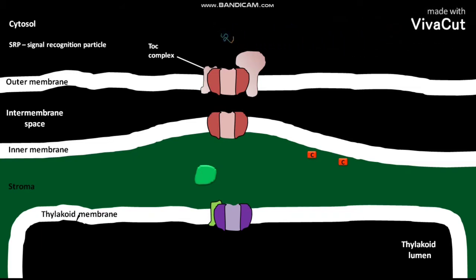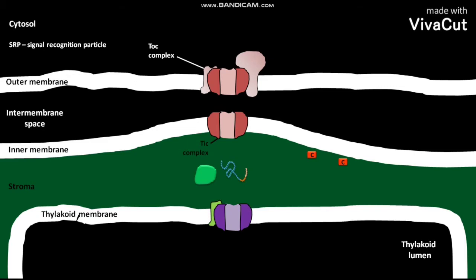The plastocyanin precursor protein reaches the intermembrane space. From here, the precursor protein is then imported into the stroma of the thylakoid through the TIC complex, which is present in the inner membrane of the thylakoid. The plastocyanin precursor protein then reaches the stroma.